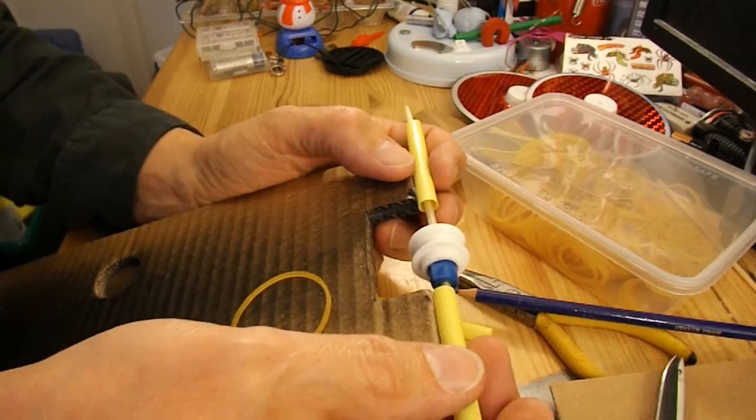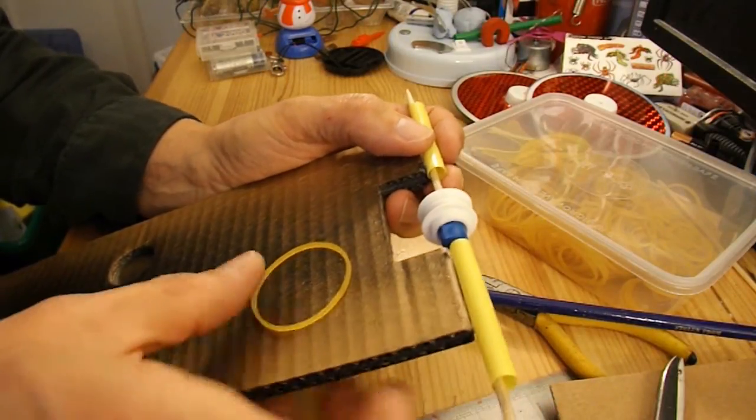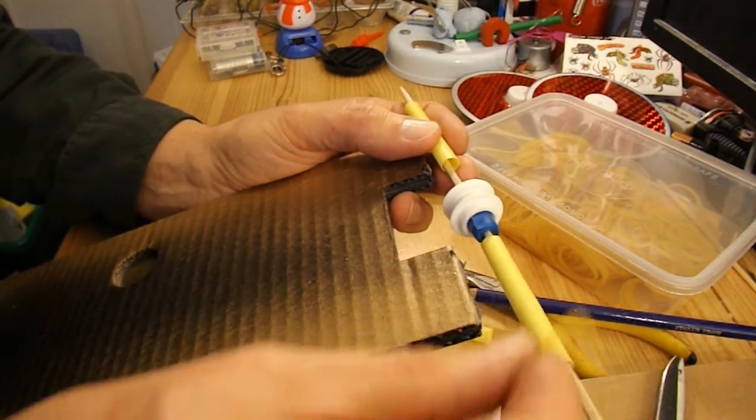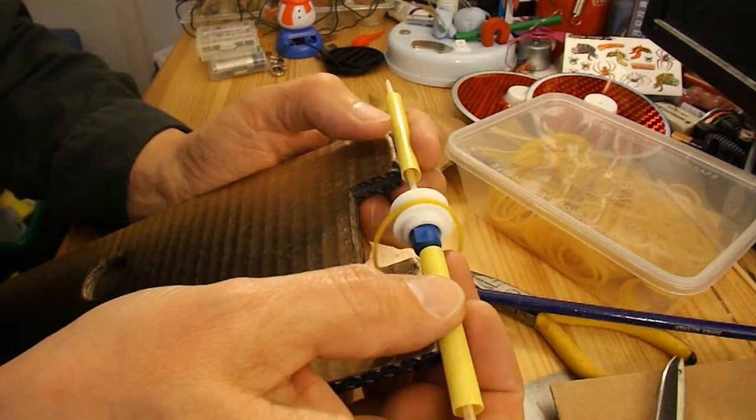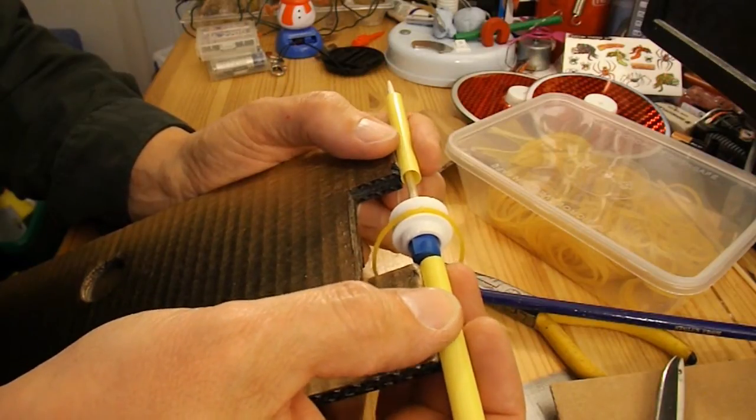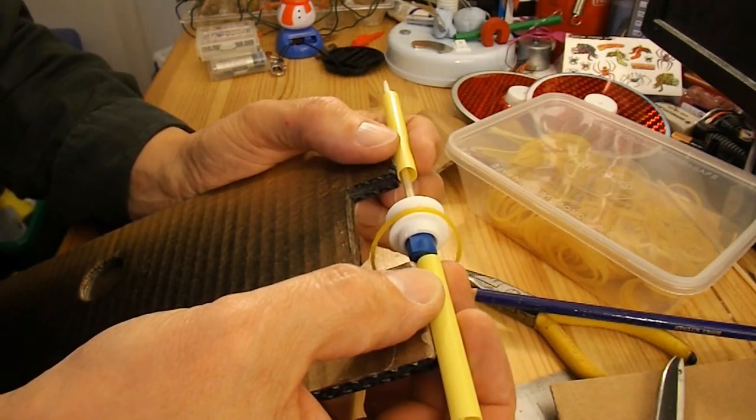I'll glue the axles in place. Got to remember to put the rubber band on first, because there's no other way of getting it in place afterwards. Unless you cut it and tie a knot in it, which I don't want to do.